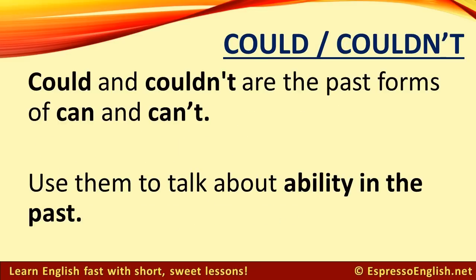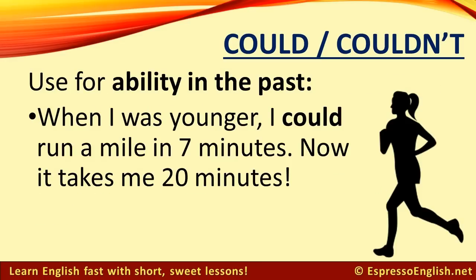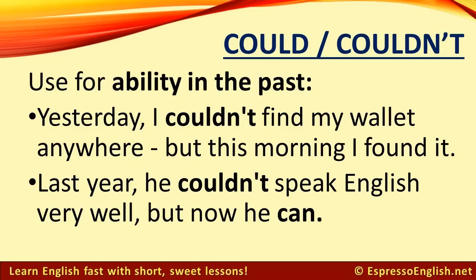Could and couldn't are the past forms of can and can't. Use them to talk about ability in the past. For example, when I was younger, I could run a mile in seven minutes — now it takes me 20 minutes. Yesterday I couldn't find my wallet anywhere, but this morning I found it. Last year he couldn't speak English very well, but now he can.